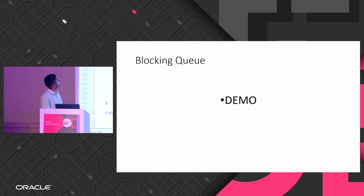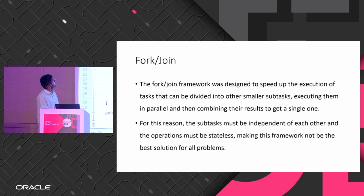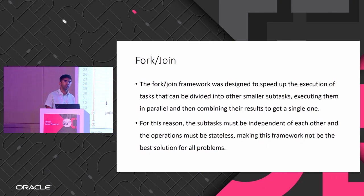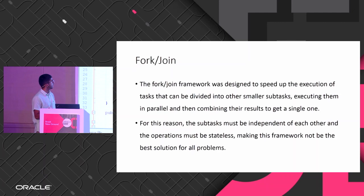So here I use the ReentrantLock and I have two conditions: not-full and not-empty. What this does is I have two conditions on which I can wait. For the producer, I'll wait on 'not full', and for the consumer, I'll wait on 'not empty'.